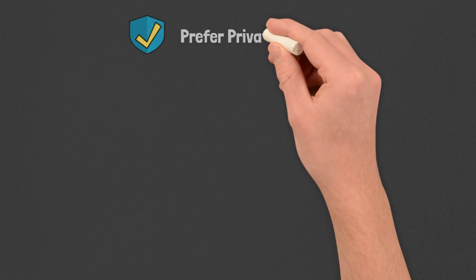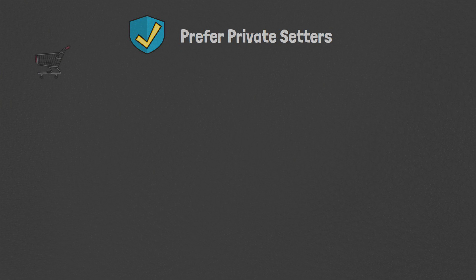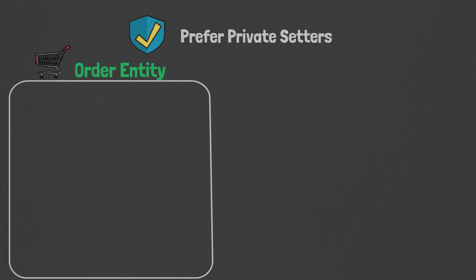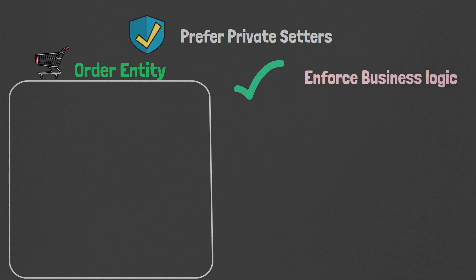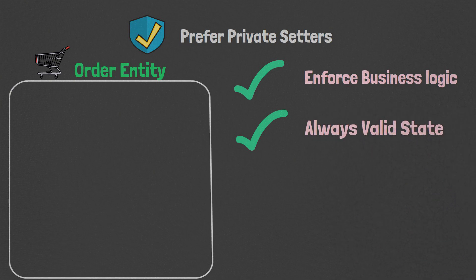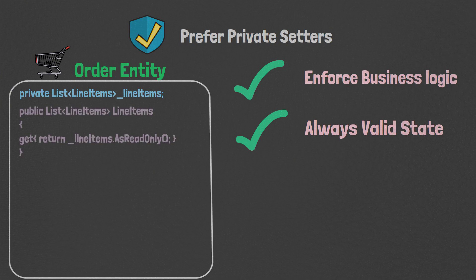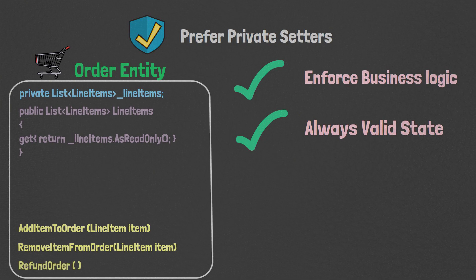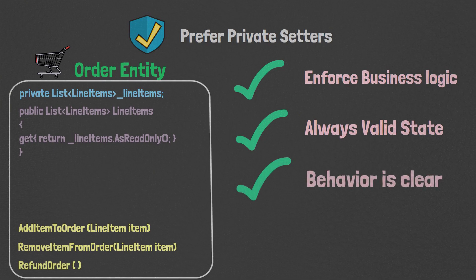Prefer private setters with public methods to update entities. Using private setters with public methods allows us to control the updating of our entities and enforce our business logic, ensuring our entities never enter an invalid state. Consider an order entity with a collection of order items. If we just expose a collection of order items, it's not clear what actions or behaviors we expect. Compare this to public methods such as add item to order, remove item from order, and refund order — the intention and behaviors of the entity are clear.